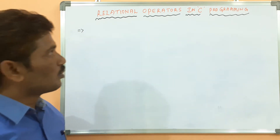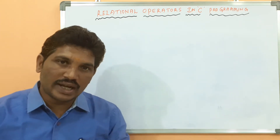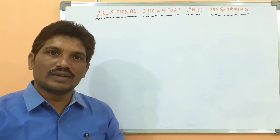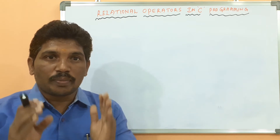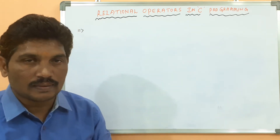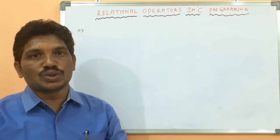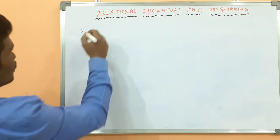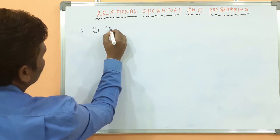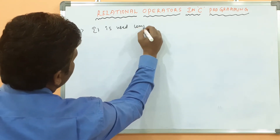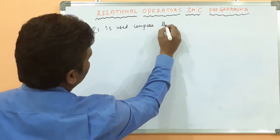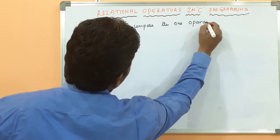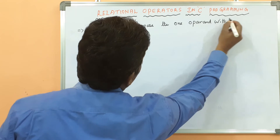Today I will explain about relational operators in C. First I want to tell you what a relational operator is and what its importance is. Why should we use relational operators in any programming language? The relational operators are used to compare one operand with another operand.